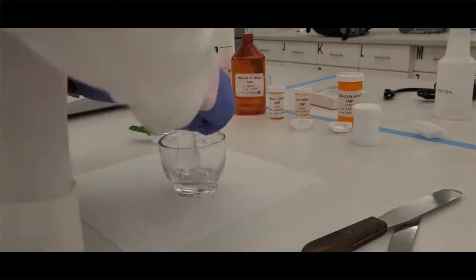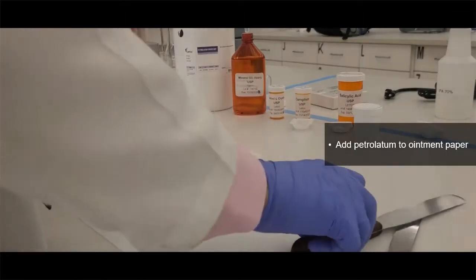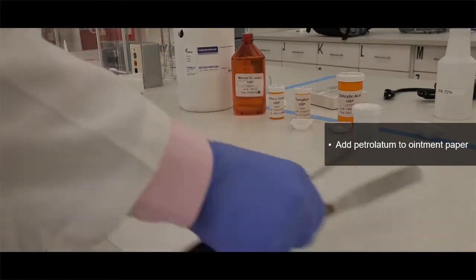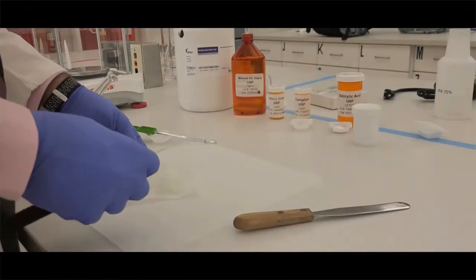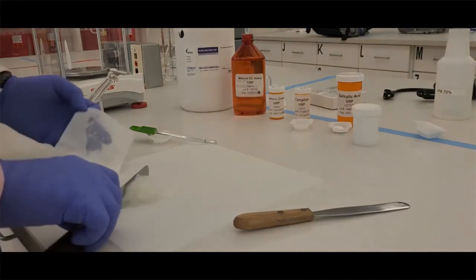Once that is done, the next thing that I will do is I will weigh out my ointment, my petrolatum. That's going to be on an ointment pad. I'm going to use a spatula. There's two different spatula sizes. I'm going to use the bigger size here. I'm going to use that to scrape off my white petrolatum from the white paper.